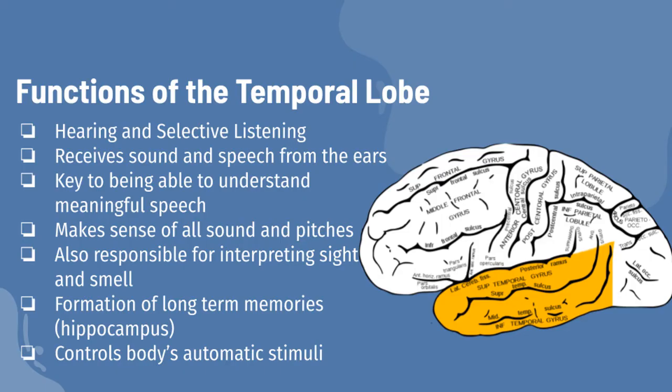The temporal lobe doesn't only process sound though. It's also responsible for interpreting smell and even sight. While vision is mainly controlled by the occipital lobe, the temporal lobe helps you understand what you're seeing. It's the reason you can know that an apple is an apple and not a square. This also helps you recognize faces.